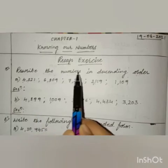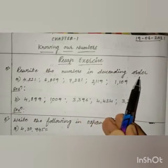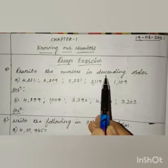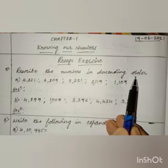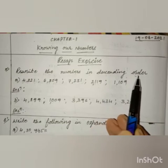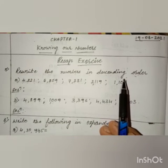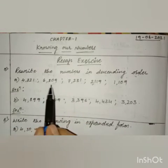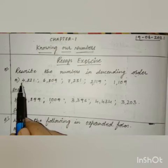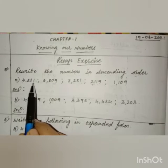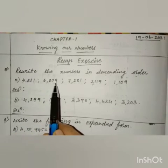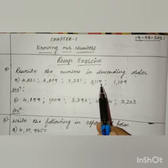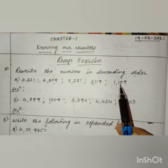Question number 5 is: rewrite the numbers in descending order. Descending order means greatest number to lowest number. Now let us find out the greatest number. The numbers are 4,321; 6,809; 7,231; 2,119 and 1,109.